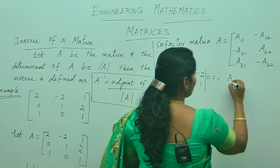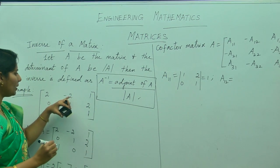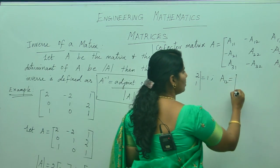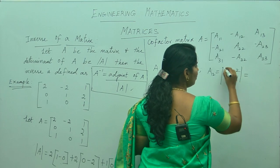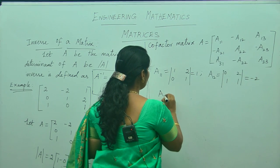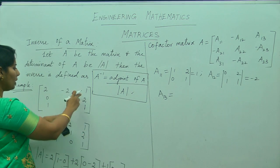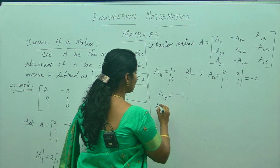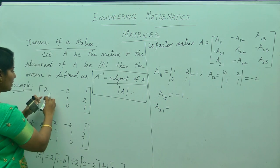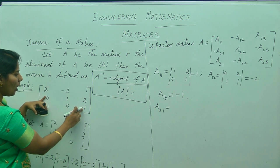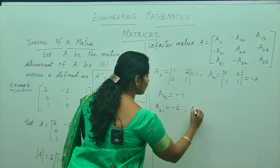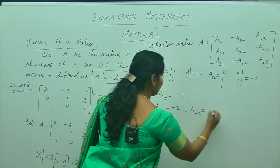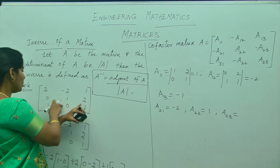Similarly, A12 — the element is minus 2. Leave the corresponding column and row. The remaining numbers are 0, 2; 1, 1, giving 0 minus 2, which is minus 2. A13: leave the corresponding row and column, giving 0 minus 1, so minus 1. For A21, you leave the corresponding column and row, getting minus 2 minus 0 which is minus 2. A22: leave the corresponding row and column, giving 2 minus 1, which is 1. For A23, again 0 plus 2.